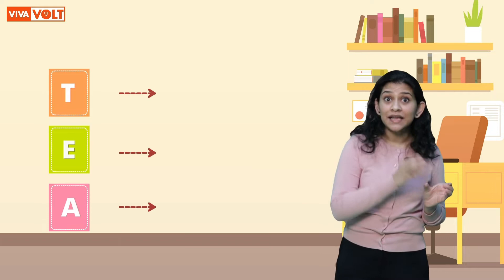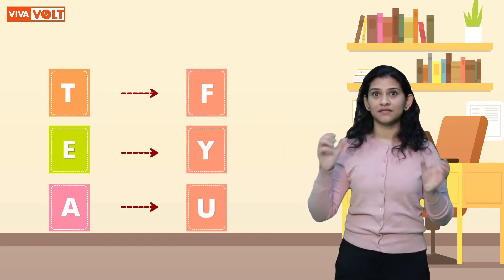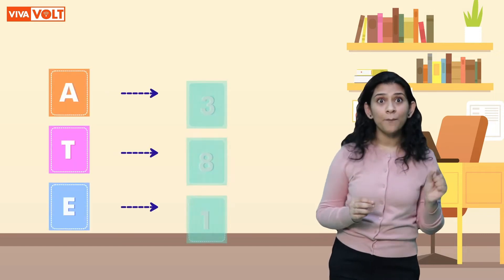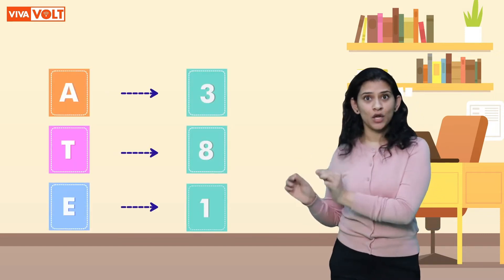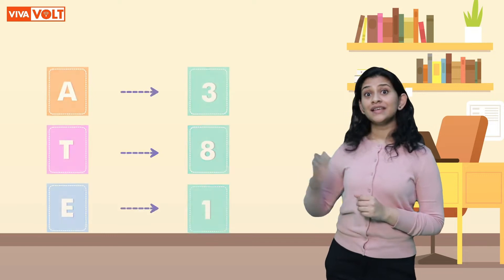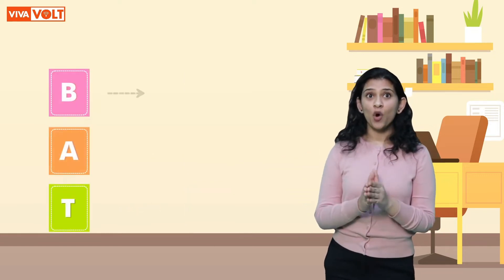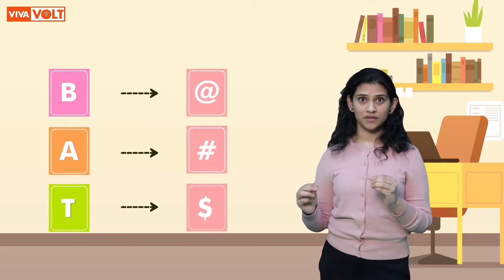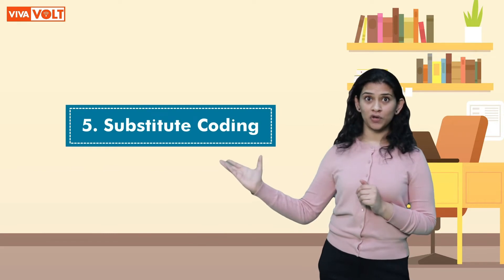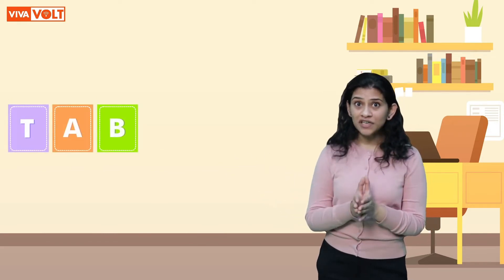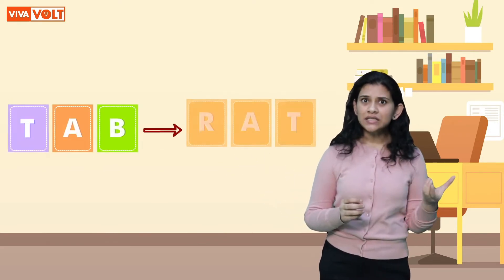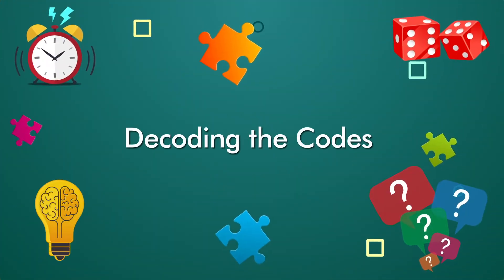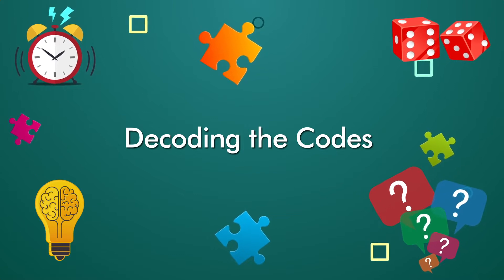Number coding: in this coding, we assign numbers to letters in a word. Symbol coding: in this type of coding, we assign symbols to letters in a word. And last is substitute coding: in this type of coding, we assign certain names to some particular words.